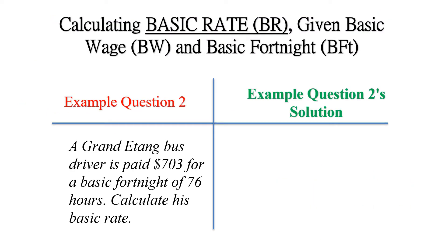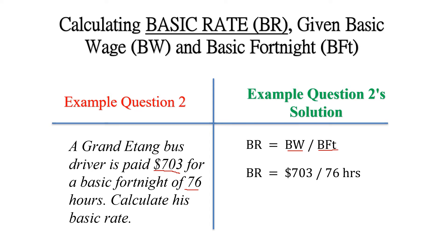Let's look at an example. A Grand The Town bus driver is paid $703 for a basic fortnight of 76 hours. Calculate the basic rate. Basic rate equals basic wage divided by the basic fortnight, that would be $703 divided by 76 hours, giving us a basic rate of $9.25 per hour.